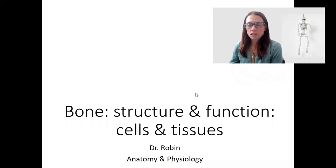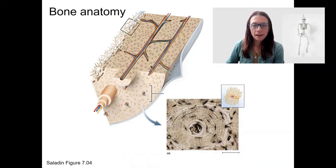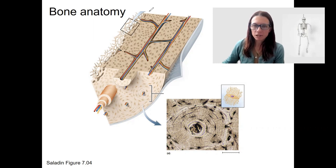Now the cells and tissues, so a more microscopic level. Here is inside of a bone, and I will be focusing on compact bone anatomy. That is all of this.